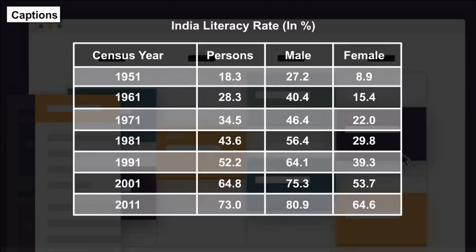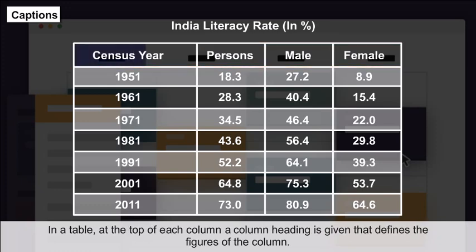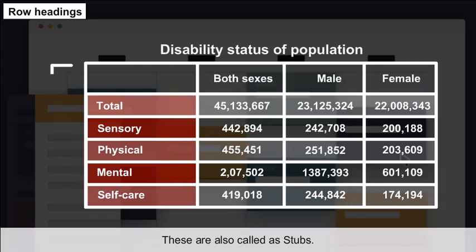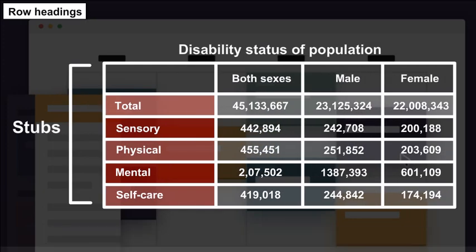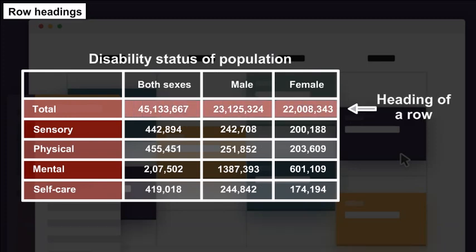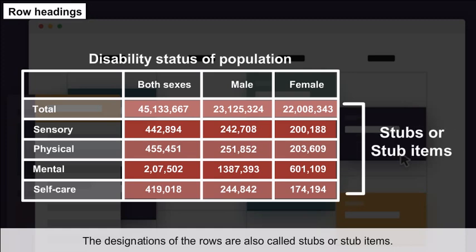Captions and Row Headings: In a table, at the top of each column, a column heading is given that defines the figures of the column. Row headings are also called stubs — they are the headings of rows, and the designations of rows are also called stub items.